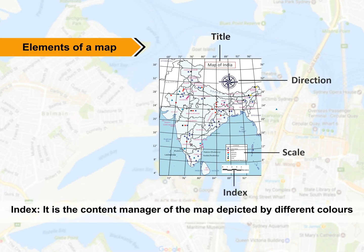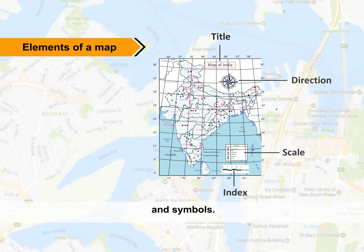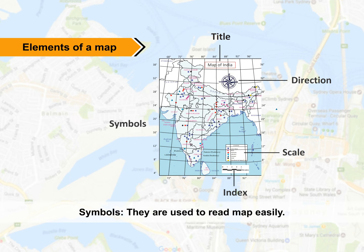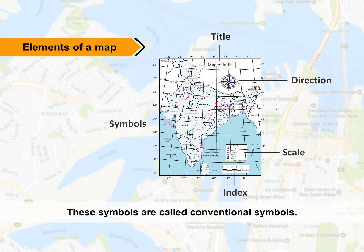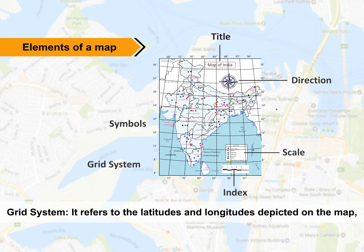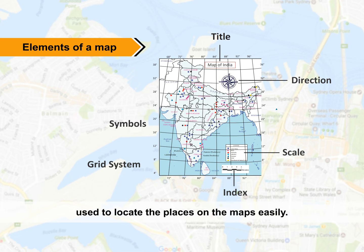Index is the content manager of the map depicted by different colors and symbols. Symbols are used to read the map easily — various symbols represent various features. These symbols are called conventional symbols. The Grid System refers to the latitudes and longitudes depicted on the map, used to locate places on the map easily.